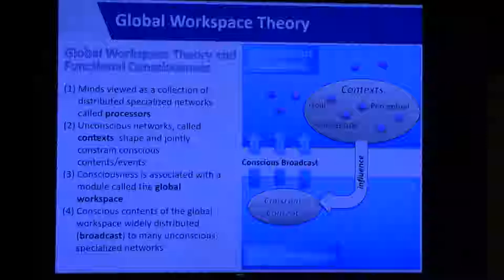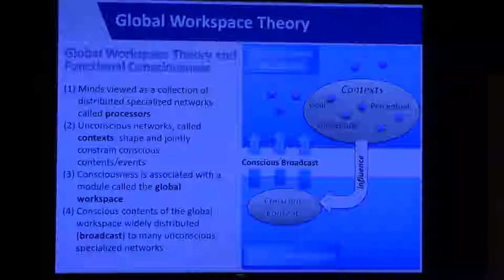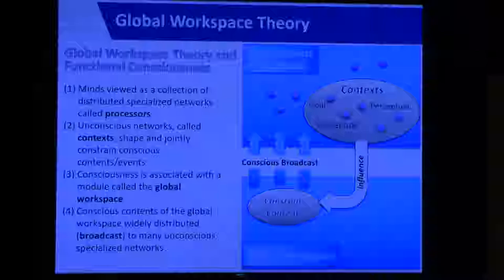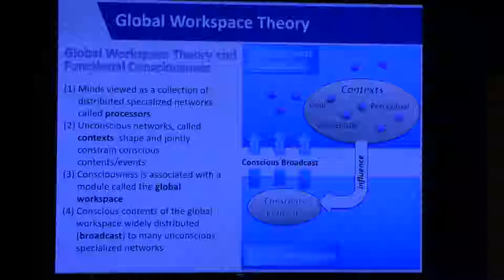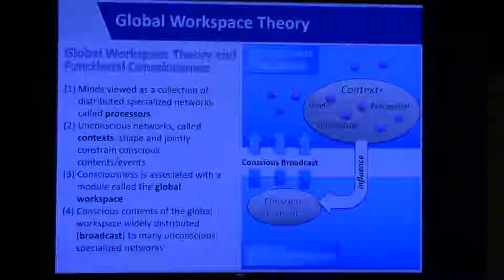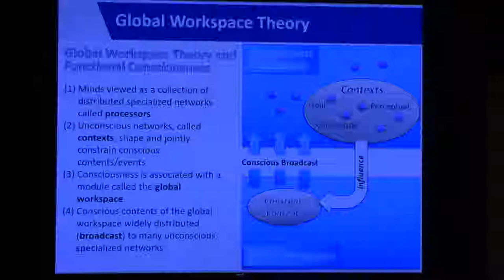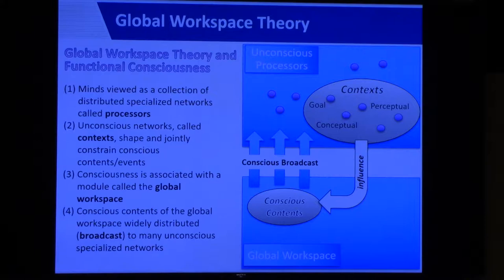In the diagram, the purple dots depict the unconscious networks. The subset working to constrain conscious contents — through goal contexts, conceptual contexts, or perceptual contexts — are shown in the ellipse under the context section, influencing the conscious contents. The bottom portion, the global workspace, is the module responsible for consciousness, and its output is a conscious broadcast that gets sent back to all of the unconscious specialized networks.